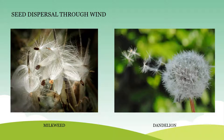They germinate wherever they get in touch with soil. Generally, the seeds which get dispersed through wind are light in weight and are attached to hairy structures. Now let us observe how the seeds get dispersed by wind in dandelion and milkweed plants.